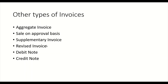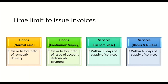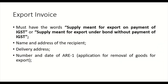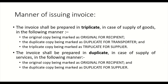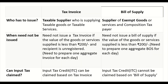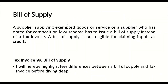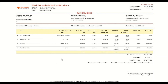There are also other types of invoices — aggregate invoice, sale on approval basis, supplementary invoice, and revised invoice — which we will cover in the next video. In summary, we have seen the contents of tax invoice and bill of supply, the difference between them, and the format of both.